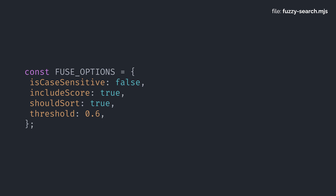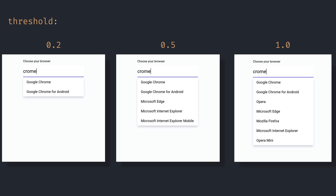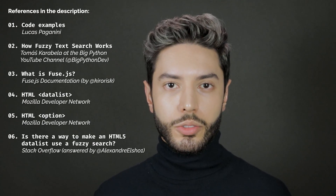Fuse.js provides a lot of options, and they are all very descriptive. Pay special attention to the threshold option — it controls how close two strings should be for a match to happen. Setting it to 0 is the same as using an exact search, and setting it to 1 would match anything. As always, references are in the description.